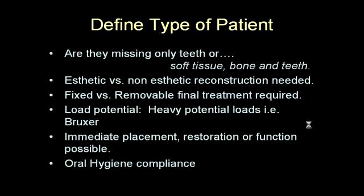Before we go into the surgical organization in your office, let's look at some of the aspects which are important from a generic standpoint on how to pick a patient. First of all, when we do surgical procedures, we need to always define the type of patient which we're going to be treating. Is it a patient who is only missing teeth? Or is there actually missing soft tissue and bone tissue and teeth? This will be slightly different because the surgical clinician will have to bring into this concept the augmentation which comes with this particular type of procedure.